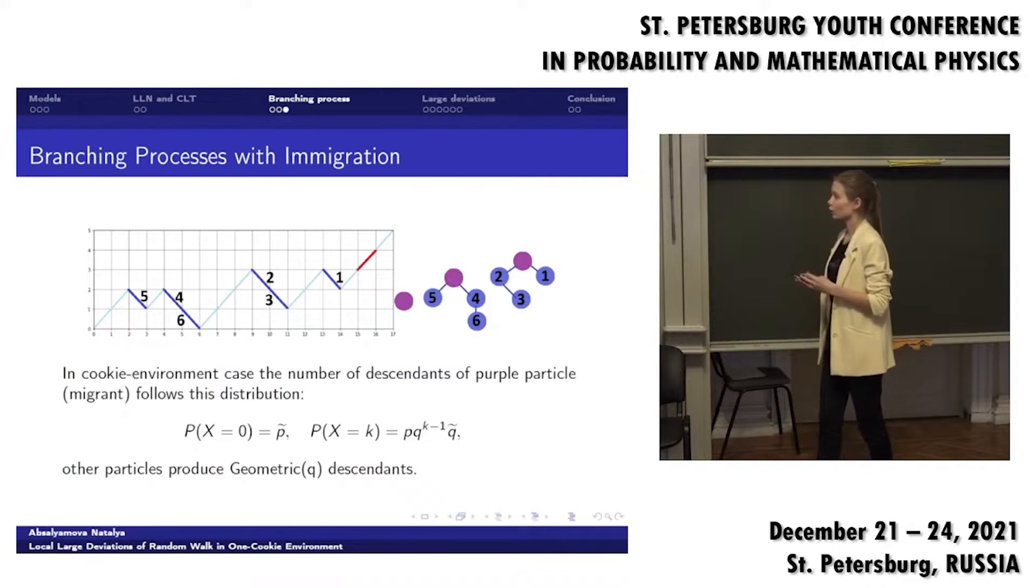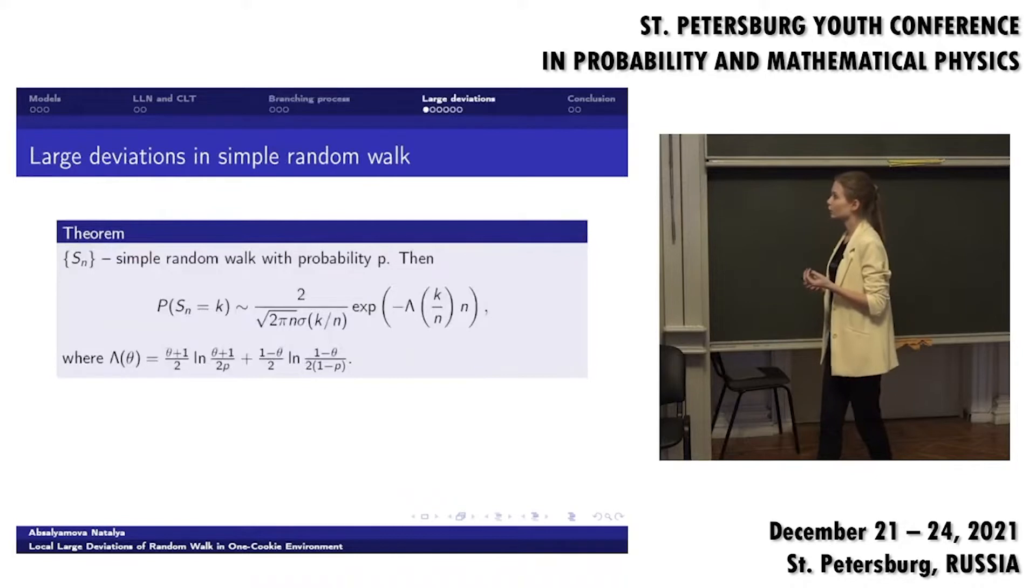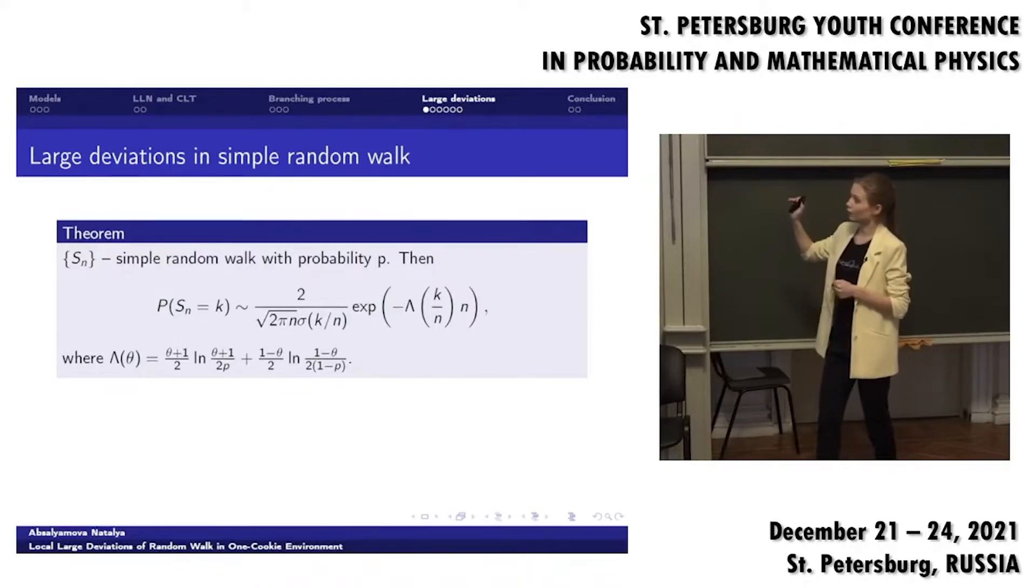This construction will help us to describe random walk between regeneration moments and we use it to calculate functions in large deviations. First of all, I'll remind you a theorem about large deviation in simple random walk. It looks like the usual theorem about large deviations. We have some exponent to the power of minus rate function multiplied by n. And there is a formula for rate function in this case.